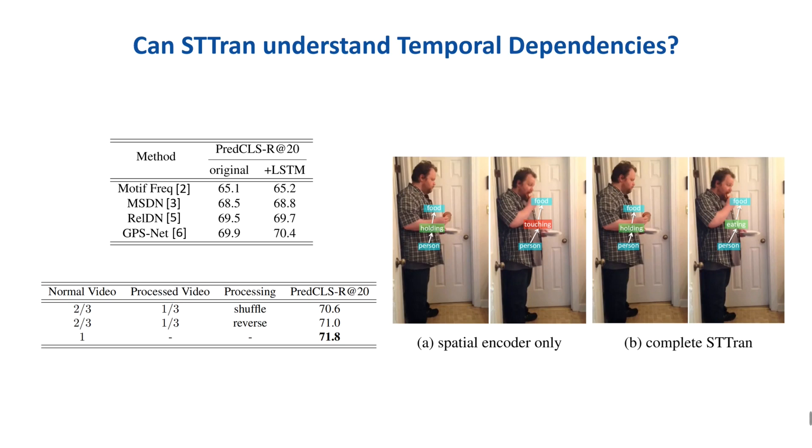In order to verify that STTran really improves performance through temporal dependencies, we randomly sample one-third of training videos and shuffle or reverse them. After adding noise in the temporal information, the performance of STTran drops. The figure shows that the complete STTran can infer relationships better with temporal dependencies.